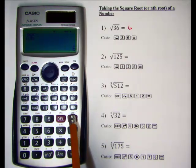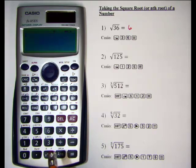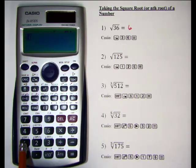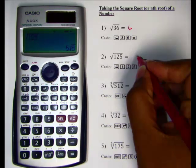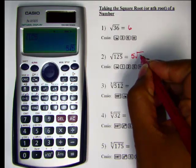Moving to problem number 2: the square root of 125. Now we're going to see what happens when we take the square root of a number that is not a perfect square. We hit our square root button, type in 125, and the Casio gives us 5 times the square root of 5, or 5 root 5.